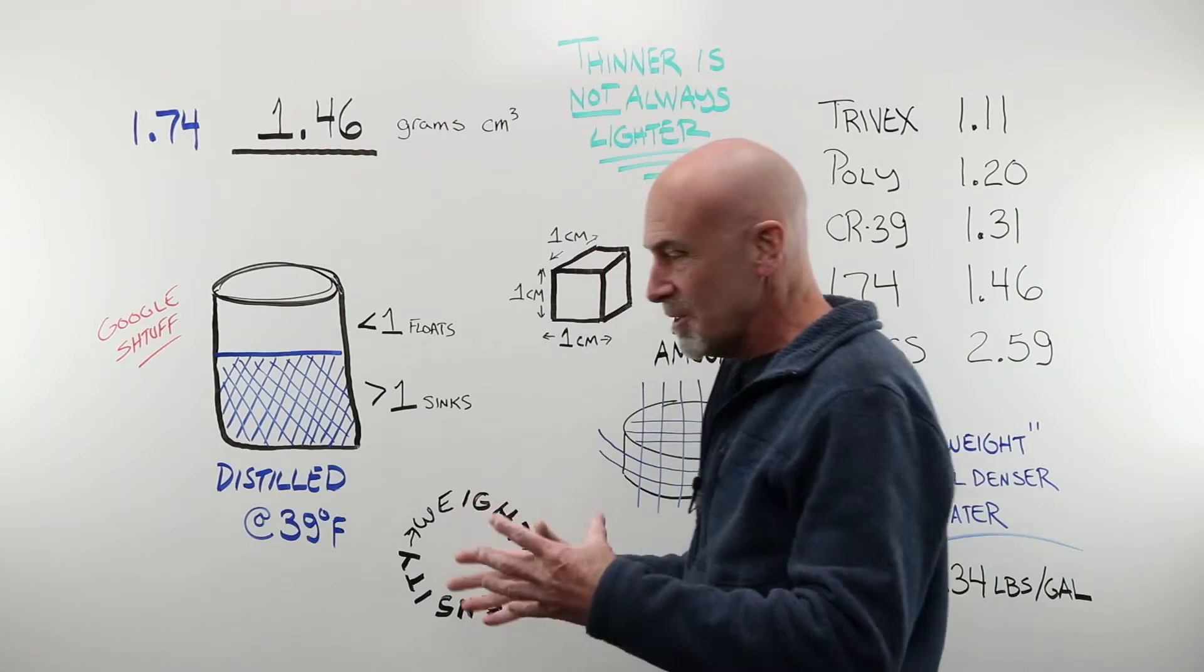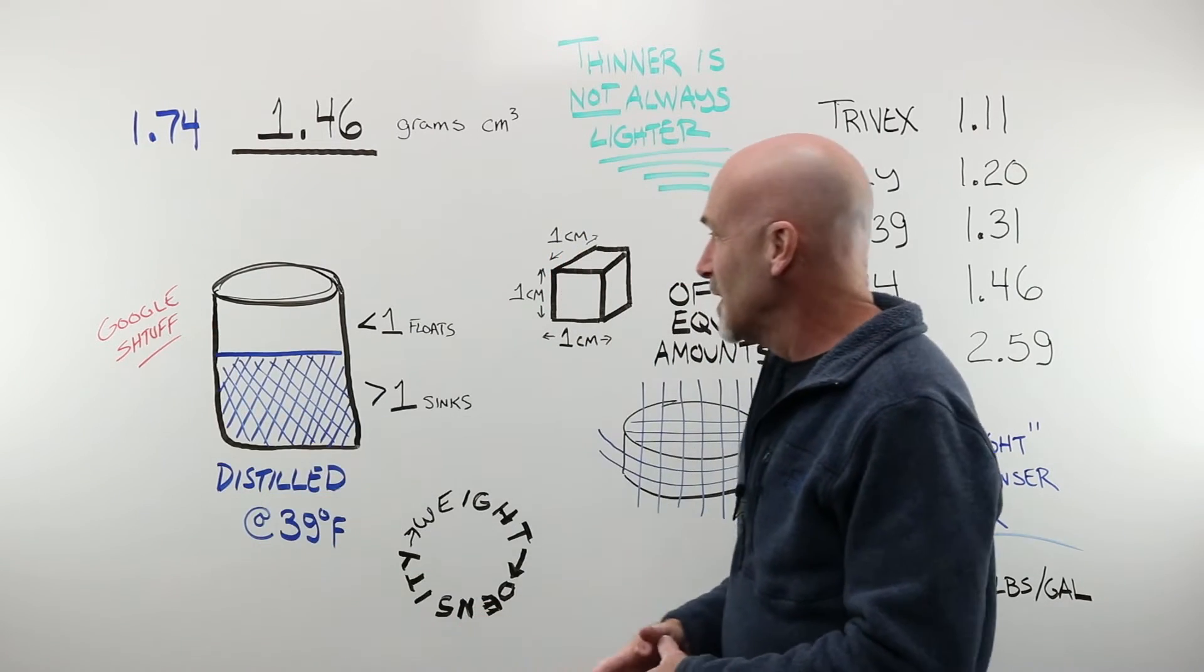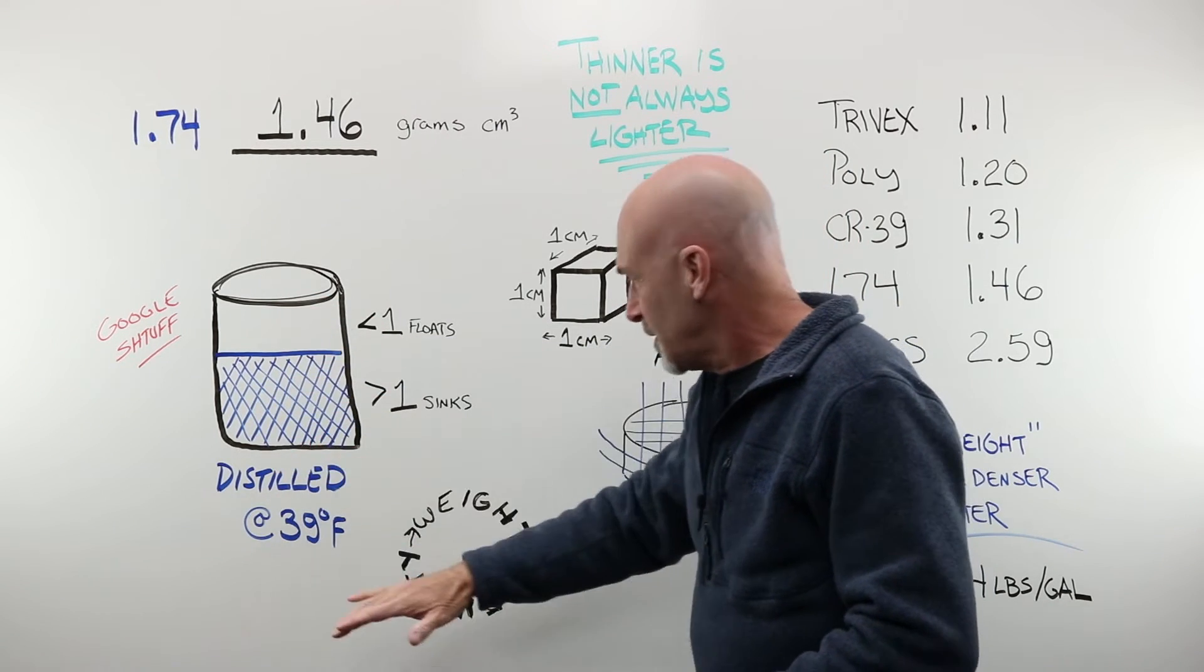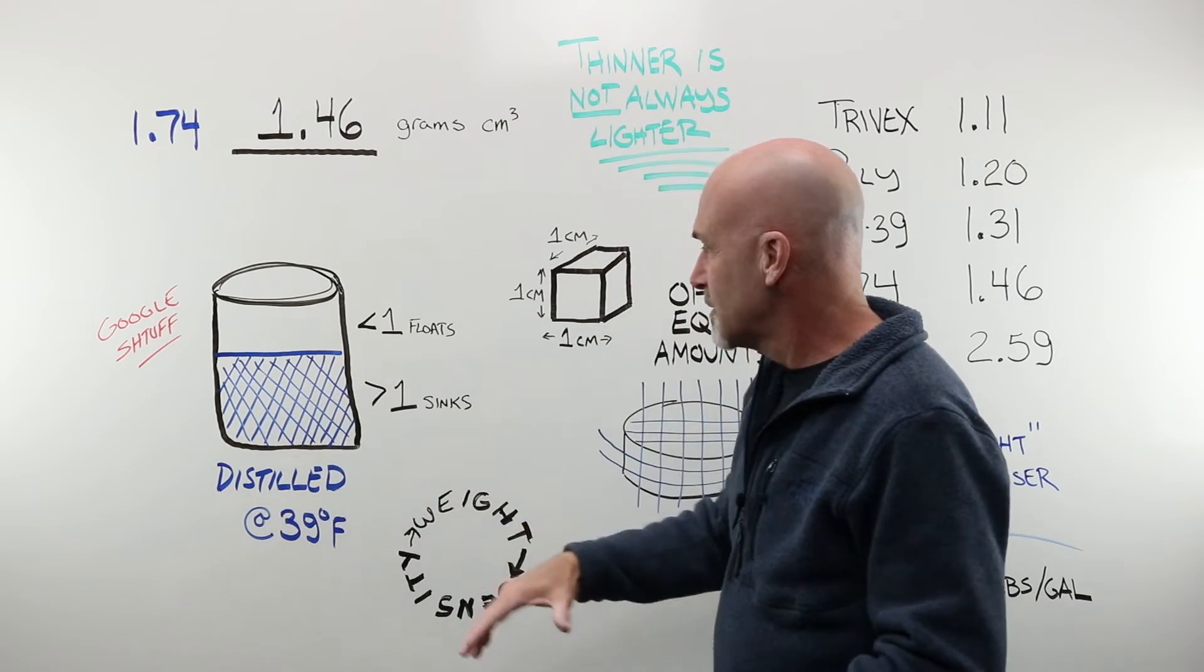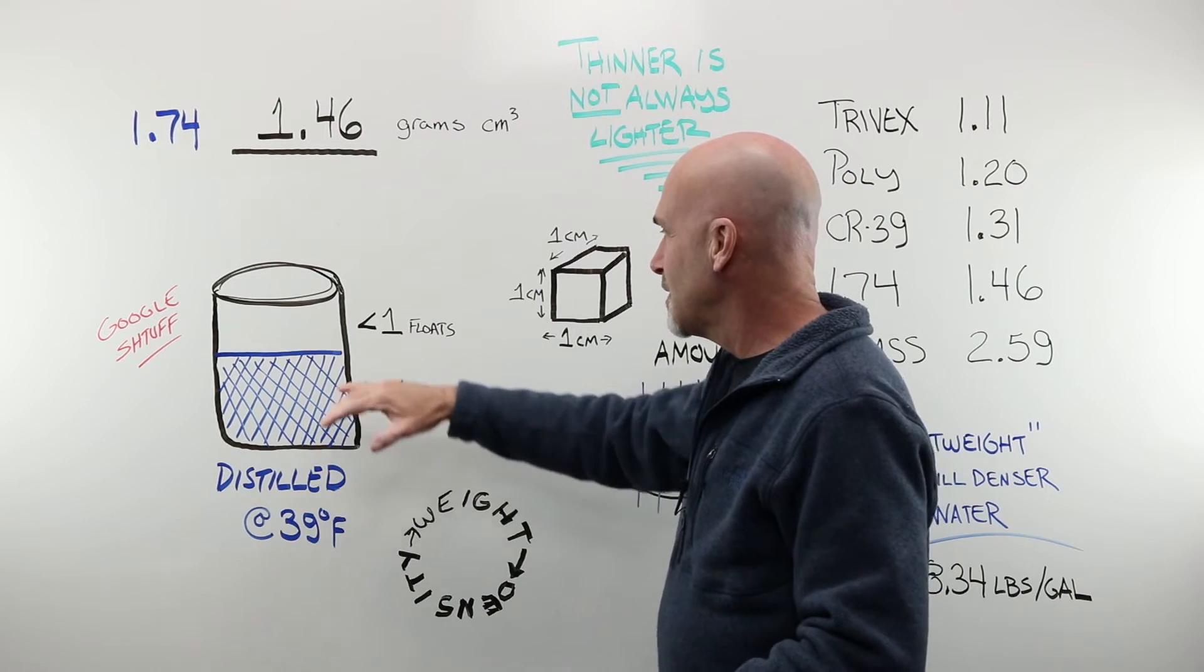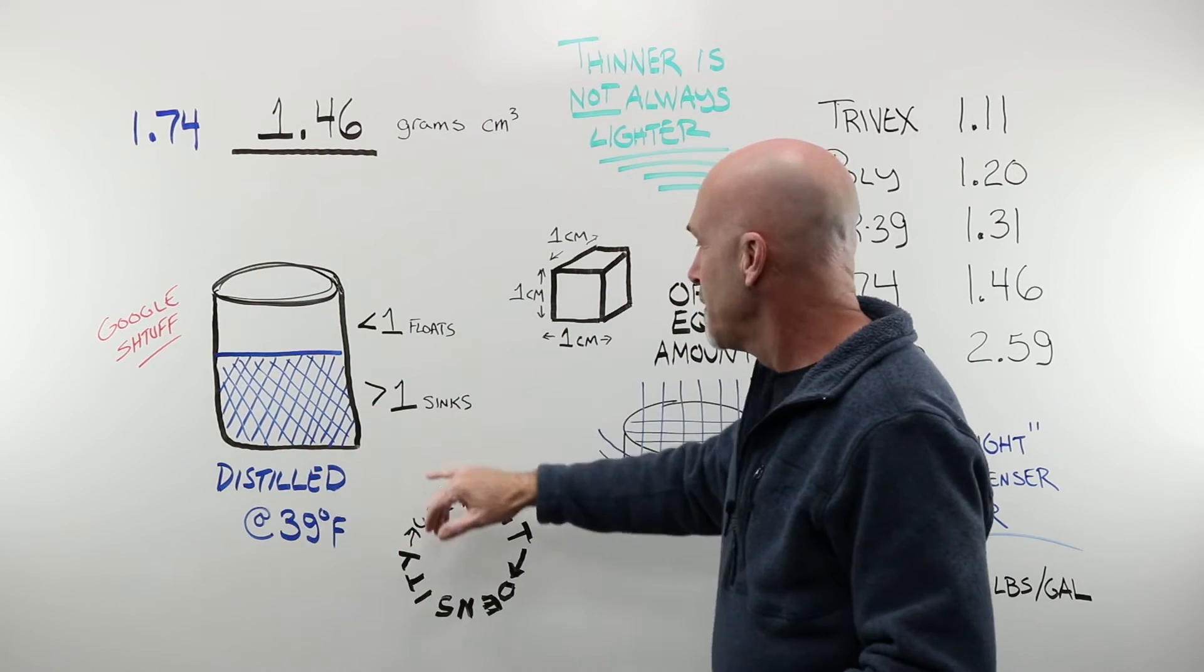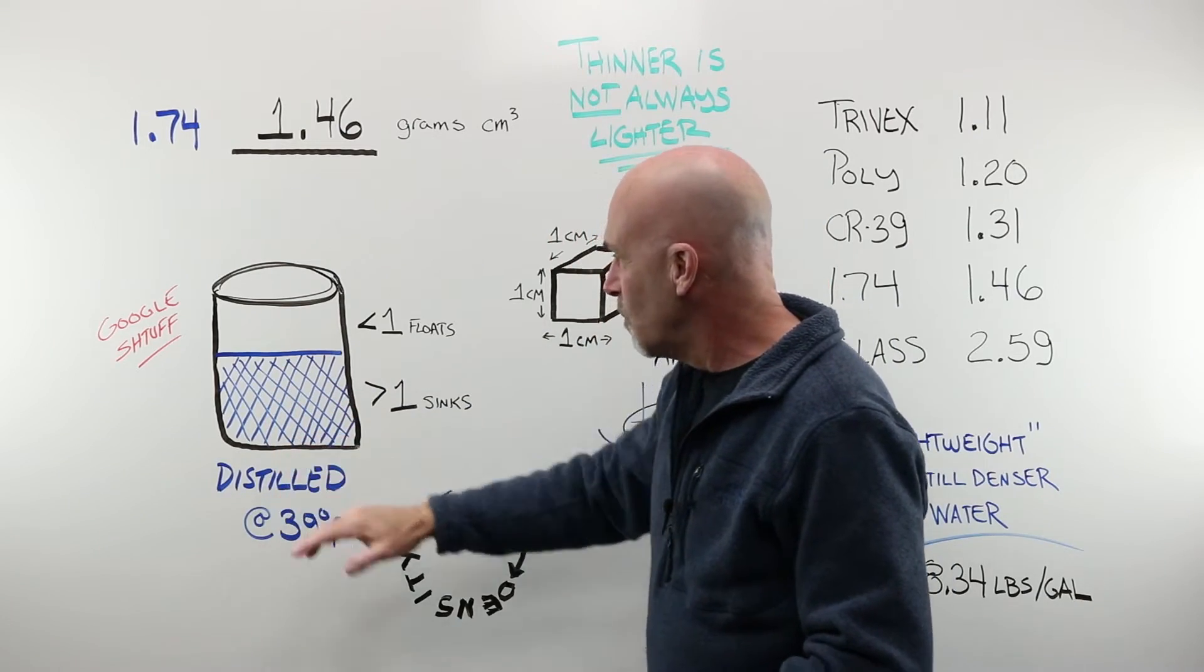Now, the other thing you're going to see, as soon as you dig into specific gravity at all, Googling stuff online, other books, it's going to show you the beaker, and the beaker is going to be filled with water, supposedly distilled water at 39 degrees Fahrenheit, which is as dense as possible condition. And it's going to say that anything that's put on top of the water and it floats is going to be a specific gravity of less than one, 0.99, 0.7, 0.4. If it is greater than one, it is going to sink down into the water.